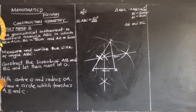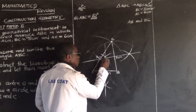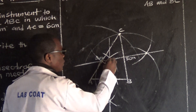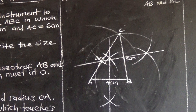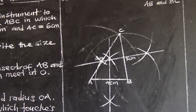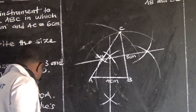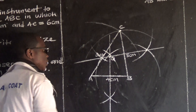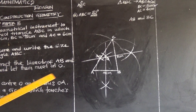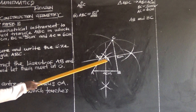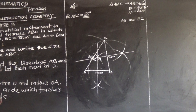Where these two bisector lines are meeting — the bisector of AB and the bisector of BC — they are meeting at this point. They are meeting at point O. The question says: with center O and radius OA, draw a circle which passes through the three vertices A, B, and C.